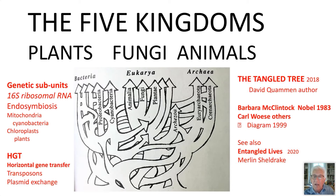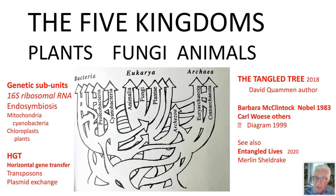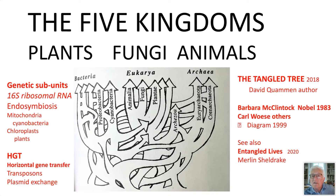If you want to read about this, The Tangled Tree by David Quammen is a great source. My favorite character in that is Barbara McClintock. She was discovering horizontal gene transfer in the late 1940s and early 1950s — she found something going on in corn that didn't come from their ancestors. No one believed her; it conflicted with the central dogma of Crick and Watson, and also, she was a woman. She was ignored until 1983, when she won the Nobel Prize. Also recommended: Entangled Lives — two very good sources to look at.